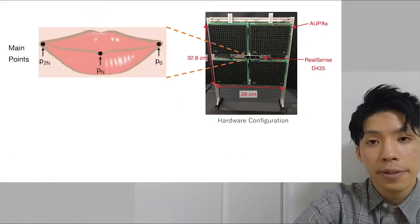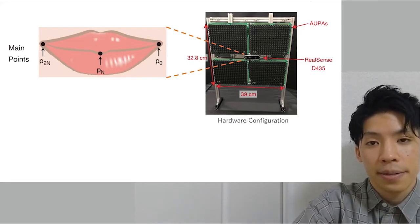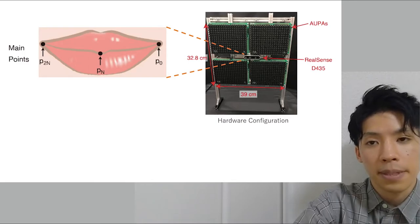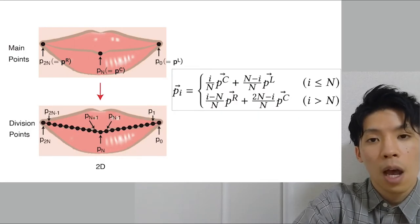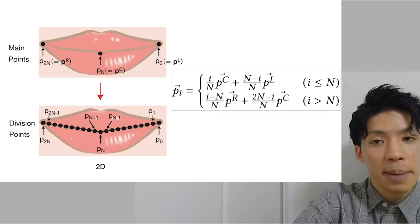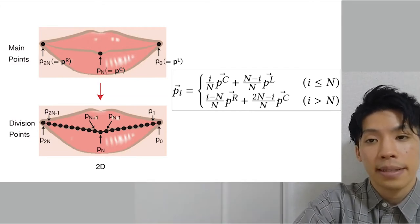Let me explain how to determine the 3D coordinates of the point to be stimulated. First, we acquired the 2D coordinates of three main points of the lips by processing the 2D image with a facial landmark detector. Next, we obtained the 2D coordinates of division points by respectively dividing the straight line from the left commissure to the center and the straight line from the center to the right commissure into some equal parts.